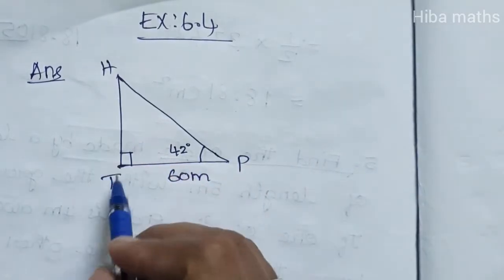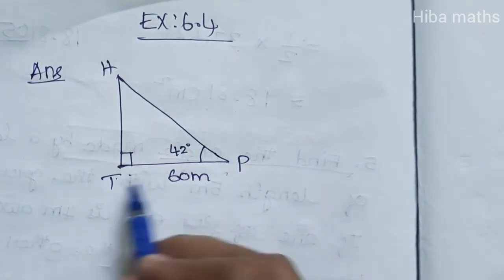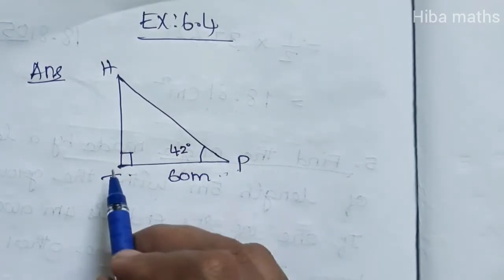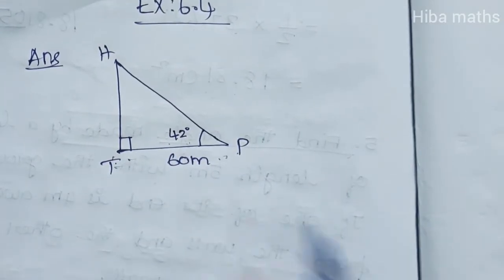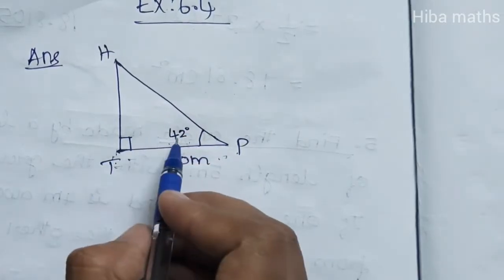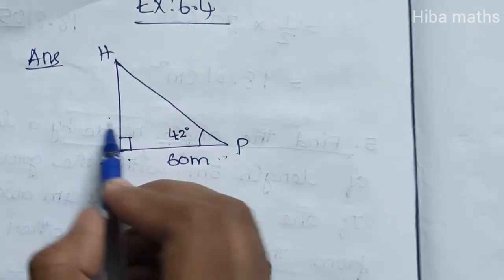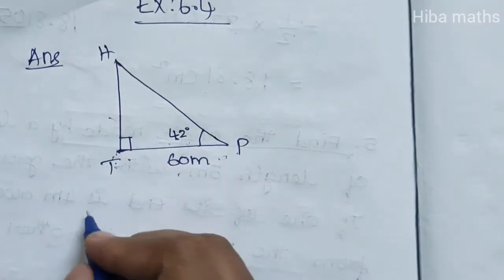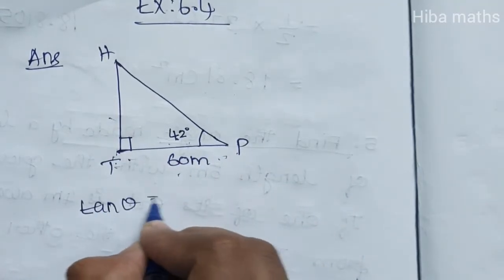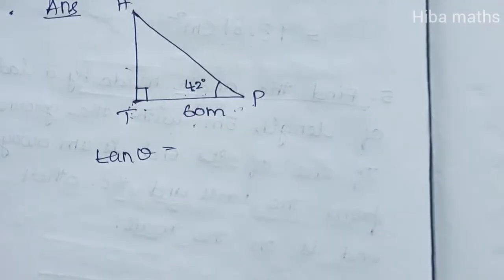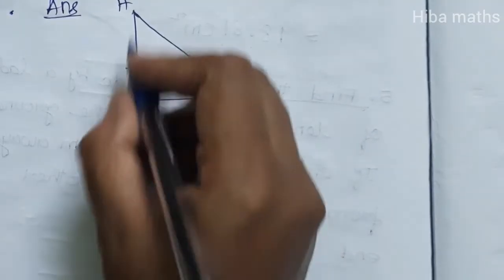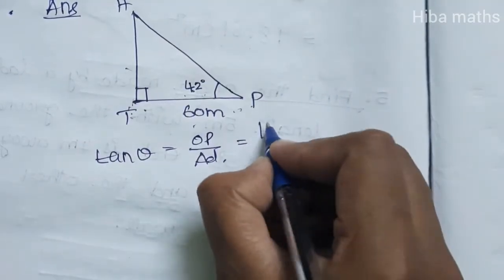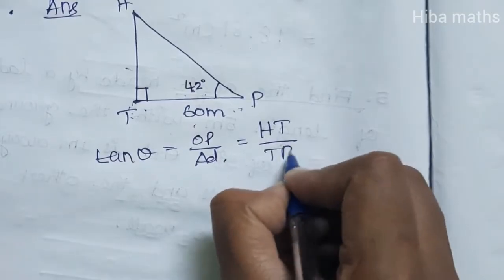In the diagram, HT is the height of the tree, TP is 60 meters, and P is the observation point. The height HT is the opposite side and TP is the adjacent side to the angle theta. So tan(theta) is equal to opposite over adjacent, which gives us HT over TP.